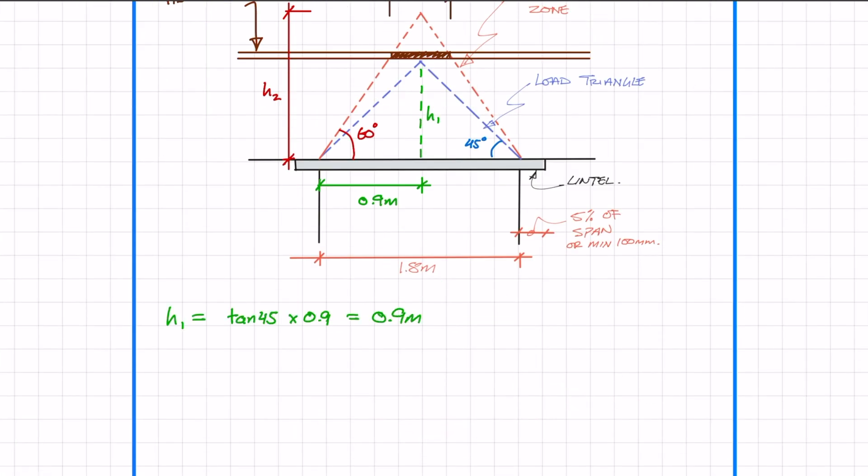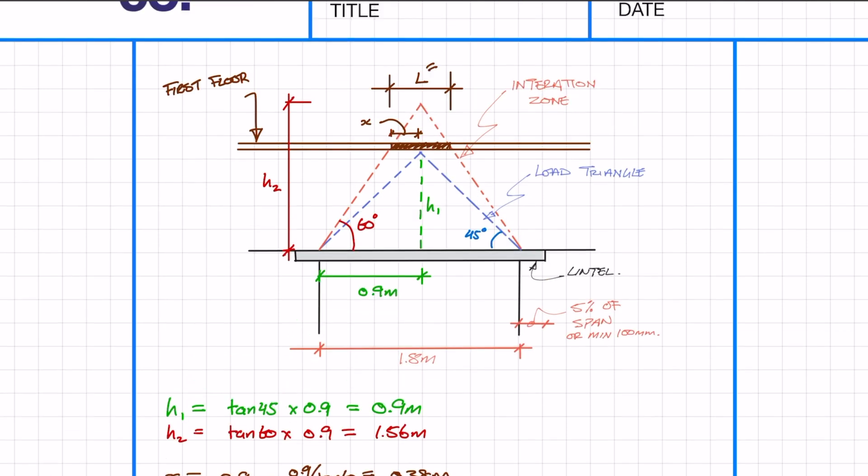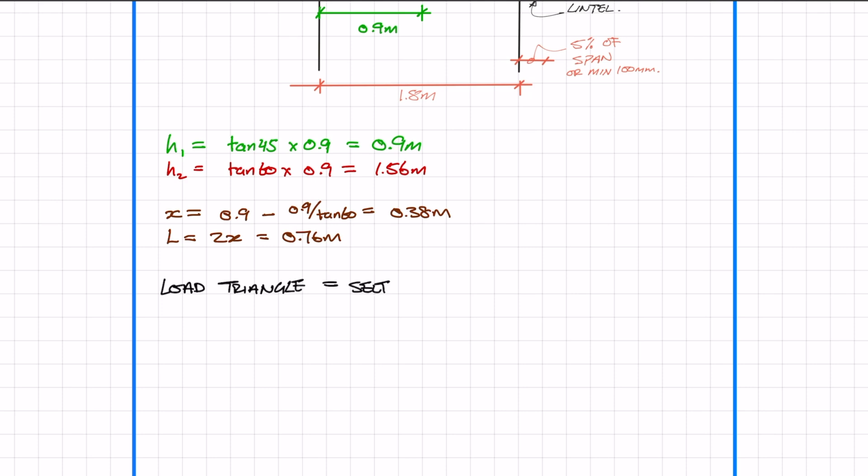Using simple trigonometry we can calculate H1 and H2. Again, using simple trigonometry we can calculate X and then L. Just to recap on what the loaded triangle is and what the interaction zone is.